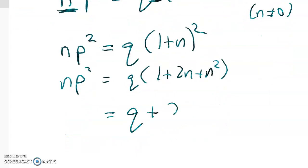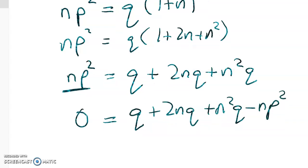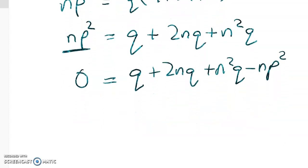So n p squared is equal to q times 1 plus 2n plus n squared. And I'm nearly there now. Expanding this side, I get q plus 2nq plus n squared q. And over here I've still got n p squared. So let's subtract this from both sides because I'm heading to having something equal to 0. So I've got 0 equals q plus 2nq plus n squared q minus n p squared.